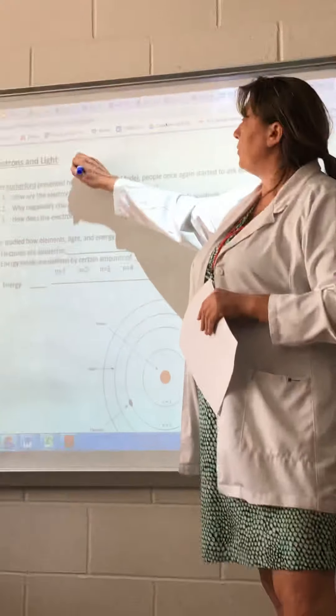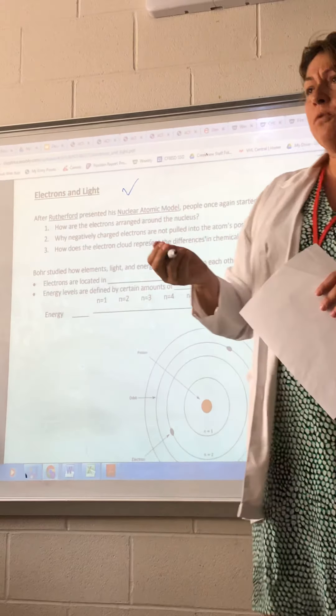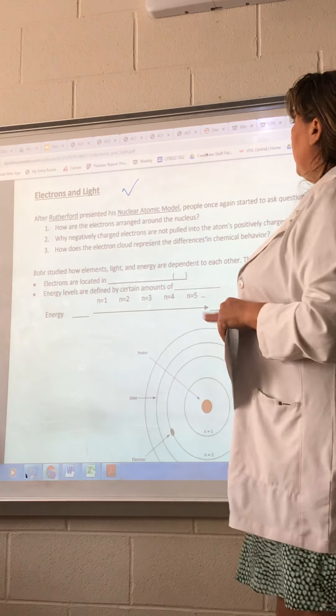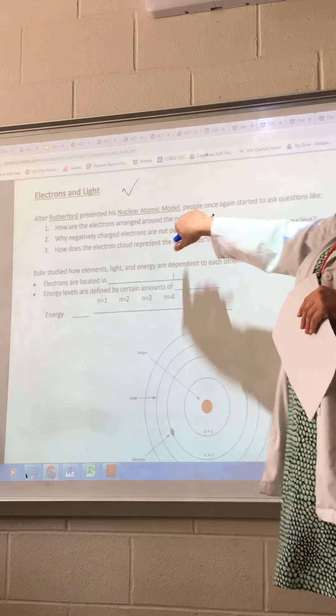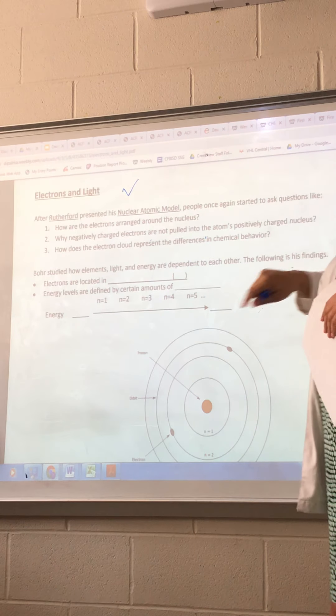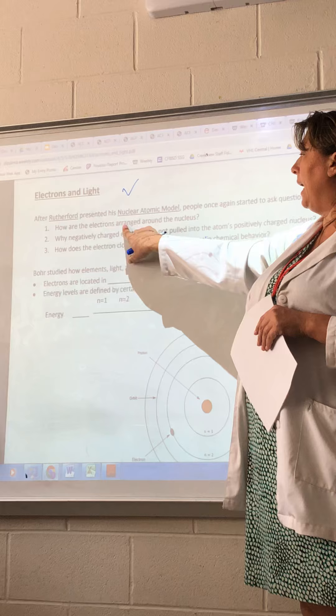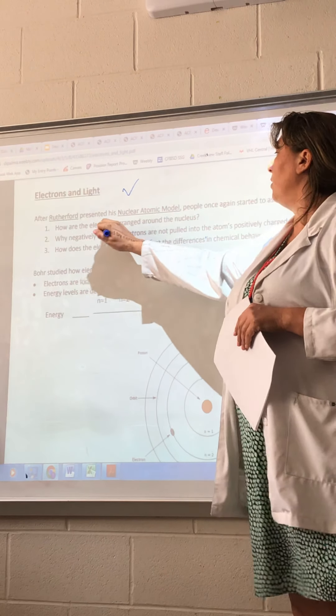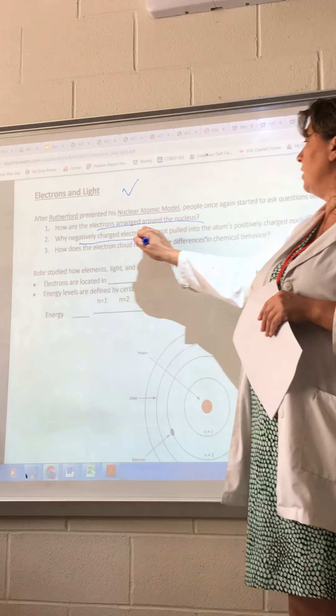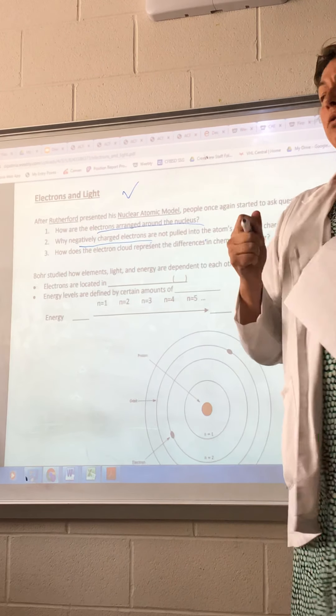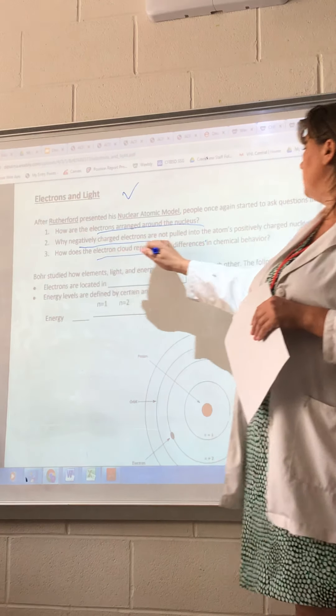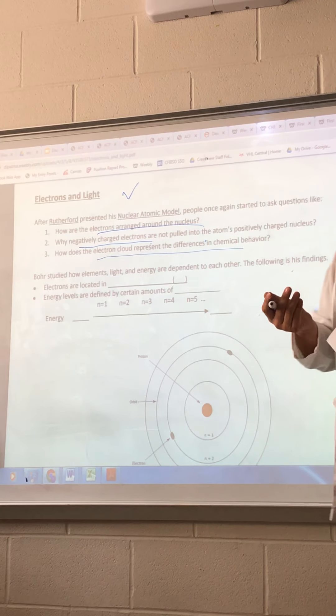So today we are discussing electrons and light. Ernest Rutherford conducted his experiment with the gold foil and he presented his nuclear atomic model with the nucleus in the middle and people again started to ask themselves how are the electrons arranged around the nucleus and why don't the negatively charged electrons get pulled into the nucleus and then how does the electron cloud represent the difference in chemical behavior?